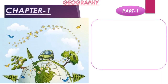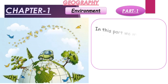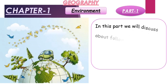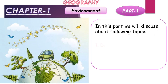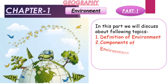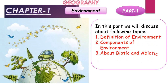Chapter 1 of Geography — Environment, Part 1. In this part we will discuss the following topics: number one, definition of environment; second, components of environment; and third, biotic and abiotic. Let's start with the definition of environment.